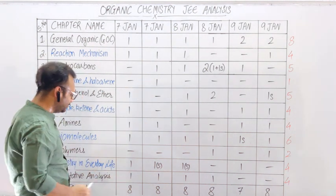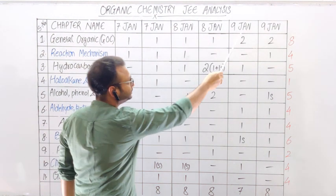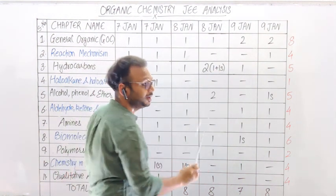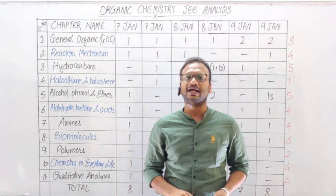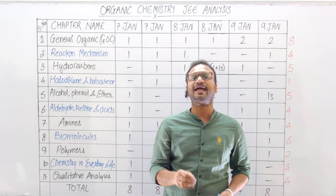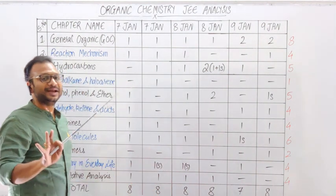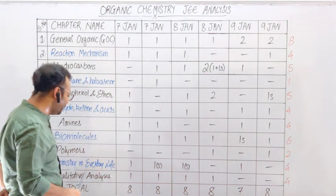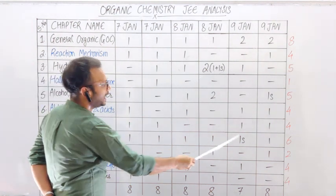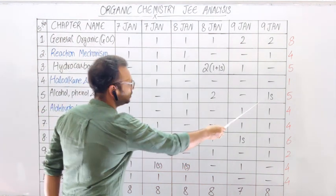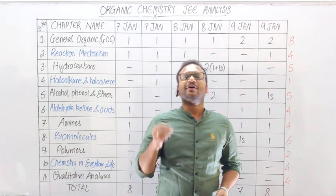Organic में most important chapters वो हैं जिनके 5 या उससे ज़्यादा questions आए: GOC (8 questions), Hydrocarbon (5), Alcohol Phenol Ether (5), Biomolecules (6+)। Numerical type questions की बात करें तो organic में maximum 1 ही numerical आता है। 6 sets में से 2 बार Chemistry in Everyday Life से, 1 बार Hydrocarbon से, 1 बार Biomolecules से, और 1 बार Alcohol Phenol Ether से numerical आया।